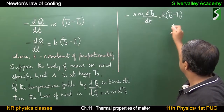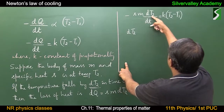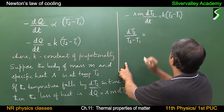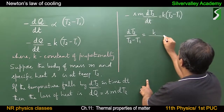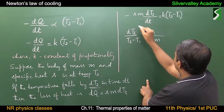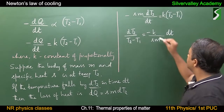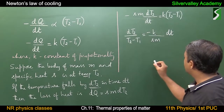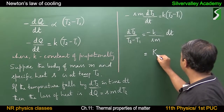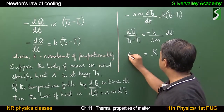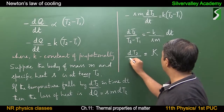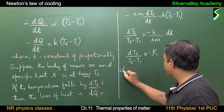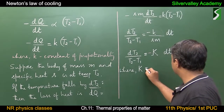The right-hand side remains as it is. Therefore, dT2 divided by (T2 minus T1) equals minus (k divided by S·m) times dt. Since k, specific heat capacity S, and mass m are all constants, these are replaced by another constant, capital K. So the equation becomes: dT2/(T2 minus T1) equals minus capital K times dt, where capital K equals k divided by S·m.